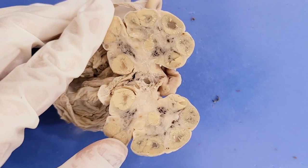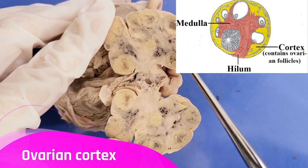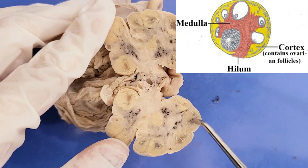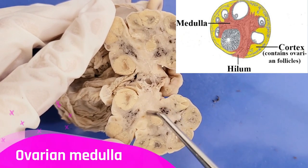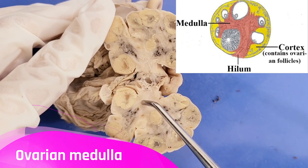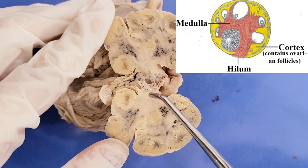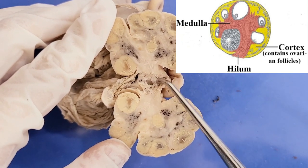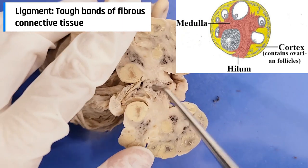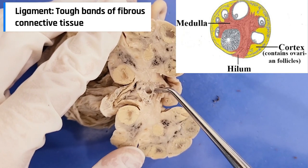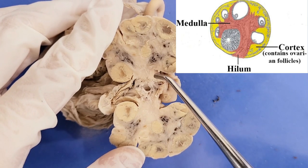The outer layer of the ovary is called the cortex, which contains the follicles that we'll talk about soon. The inner layer is called the medulla, and it's mostly neurovascular, meaning it contains nerves and blood vessels. At the very end is the hilum, which is the site of a ligament that connects the ovary with the uterus. The hilum also serves as the entry point for blood vessels.